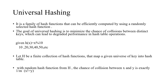Welcome to my channel. Today I am going to explain what universal hashing is. Universal hashing is a family of hash functions that can be efficiently computed by using a randomly selected hash function. The goal of universal hashing is to minimize the number of collisions between two distinct keys.